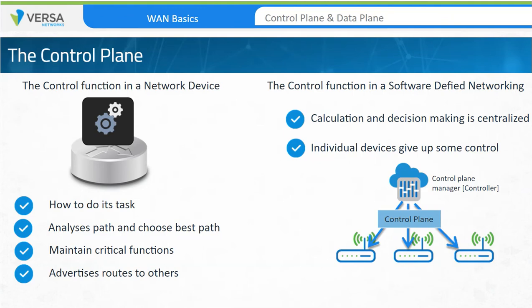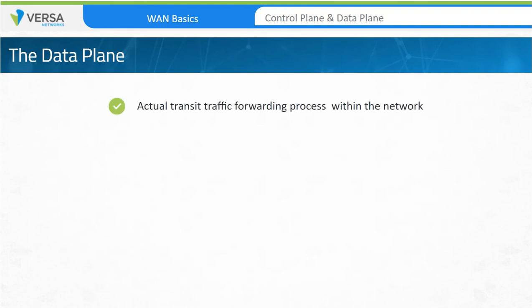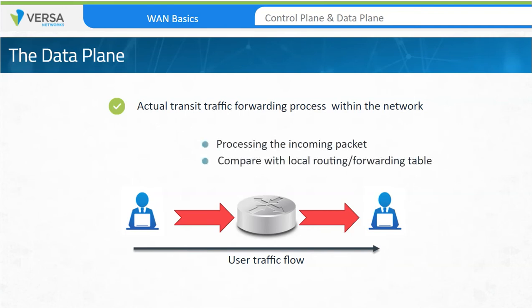In many service provider MPLS-based VPN deployments, route reflectors act as a centralized point for routing information. They share reachability information with provider edge devices about a customer's VPN topology, LAN subnets, sites, and so forth. The data plane refers to the actual transit traffic forwarding processes within the network. Where the control plane informs devices about how to reach destinations, the data plane does the actual work of processing an incoming packet, comparing it to a local routing or forwarding table, and choosing the next-hop interface.